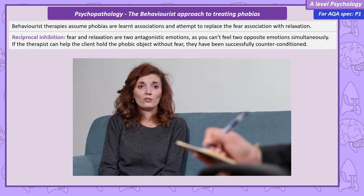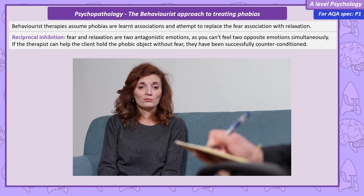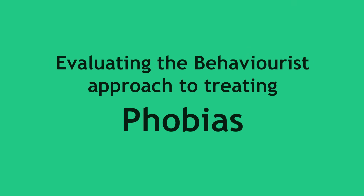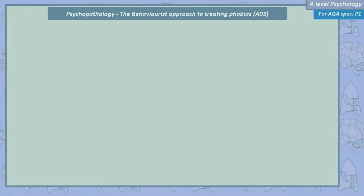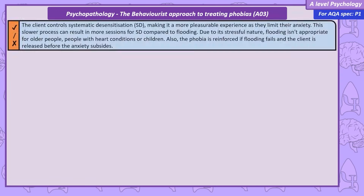You might want to return to the scenario of Laura and the bees and consider how a therapist might treat her using both flooding and systematic desensitisation. Evaluating these two approaches: systematic desensitisation is often the client's preferred treatment because the client is in control of their progress — they can stop themselves going to the next level by saying they're not fully relaxed. Flooding isn't appropriate for older people, those with heart conditions, or children. If flooding fails and the client is released before anxiety has subsided, the phobia will be reinforced. However, flooding is likely to be a quicker process, with systematic desensitisation potentially taking more sessions.